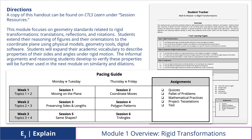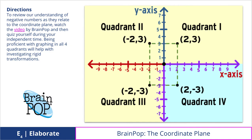The informal arguments and reasoning students develop to verify these properties will be further used in the next module on similarity and dilations. Next, we went to BrainPop to watch a brief review of the key components of the coordinate plane and how to graph ordered pairs. You are tasked with self-assessing using the quick quiz located next to the video. Who is the famous mathematician represented in the video?